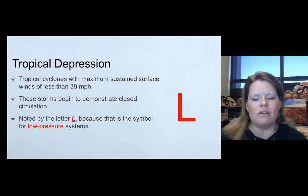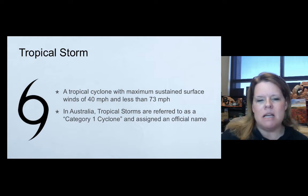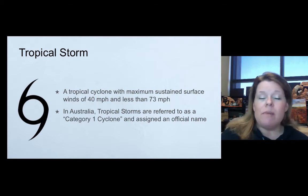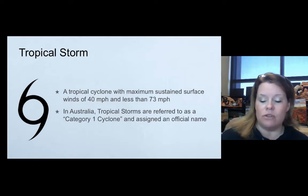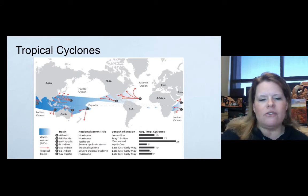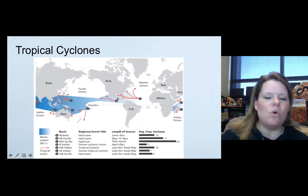If it makes it to a tropical storm, it gets a name. Tropical storms have maximum sustained surface winds of 40 to 73 miles per hour — 74 miles per hour is where a category one hurricane starts. In Australia, tropical storms are referred to as a category one cyclone. Most of the hurricanes affecting the Gulf Coast and eastern seaboard originate in the Atlantic and can also be fed from South America pushing into the Pacific.